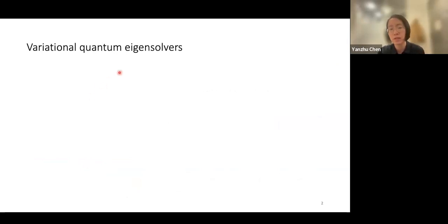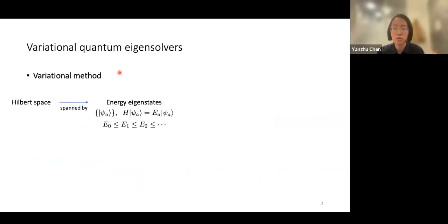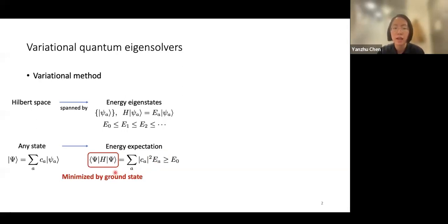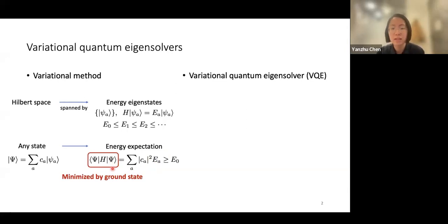Variational quantum eigensolvers are proposed to shorten the quantum circuit. They are based on the variational principle: the Hilbert space can be spanned by the energy eigenstates of the target Hamiltonian H, and for a generic state the energy expectation value is minimized by the ground state. We form an educated guess of this ground state and tune parameters to find it.